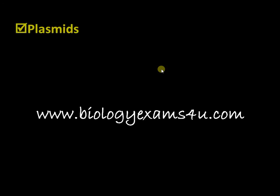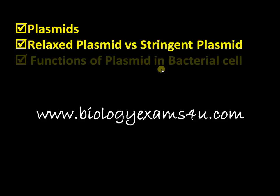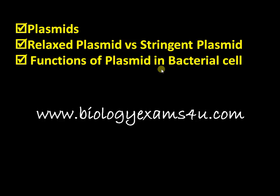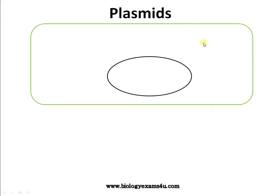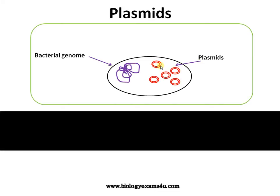In this video we are going to discuss what plasmids are, the difference between relaxed and stringent plasmids, and the functions of plasmids in bacterial cells. This is a bacterium, this is a bacterial genome, and this is the plasmid. From the figure, we define plasmids as extra-chromosomal, double-stranded, circular, self-replicating DNA molecules present in bacteria.